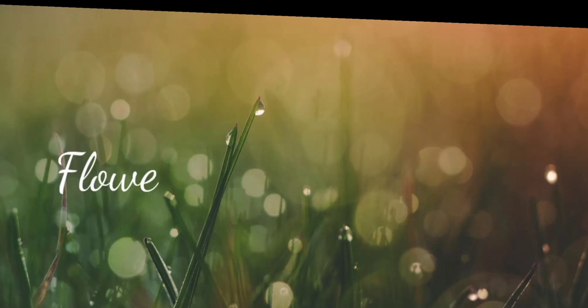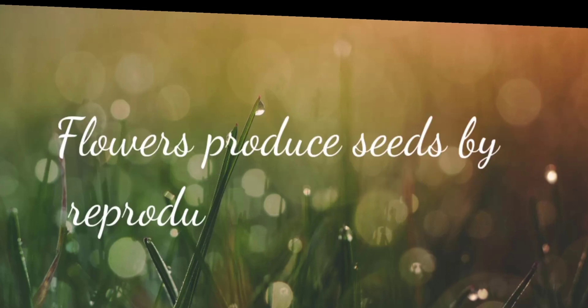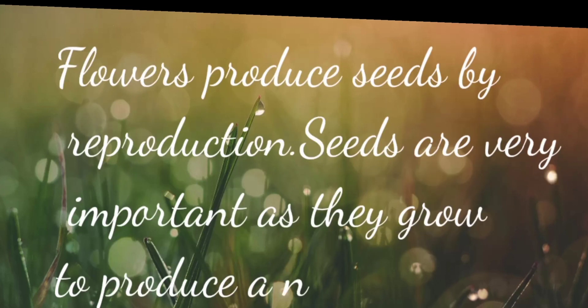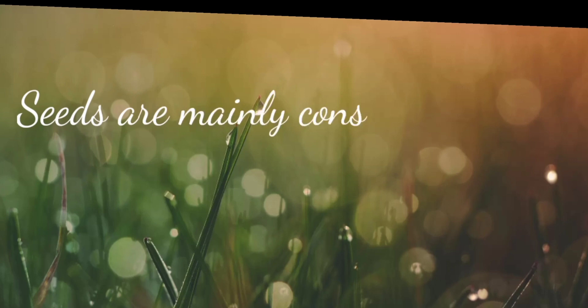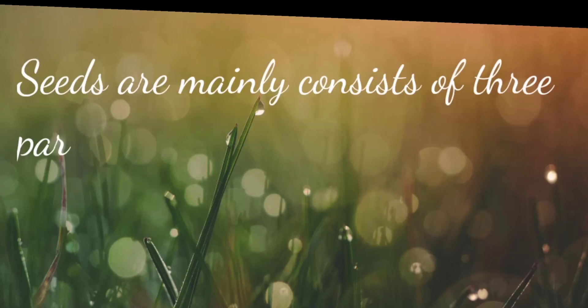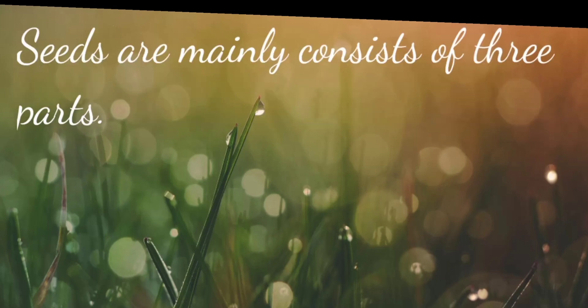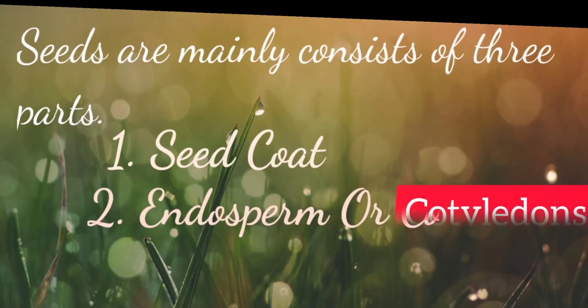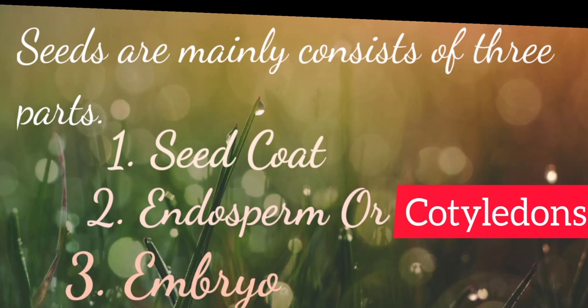Flowers produce seeds by reproduction. Seeds are very important as they grow to produce a new plant. Seeds mainly consist of three parts: seed coat, endosperm or cotyledins, and embryo.